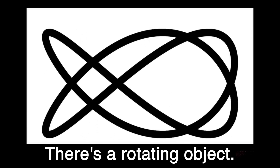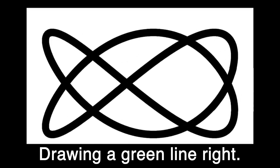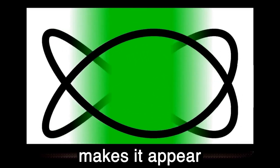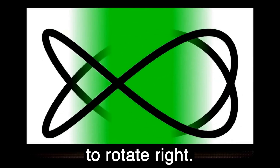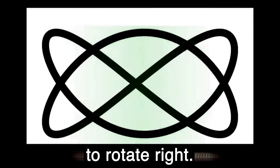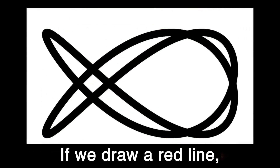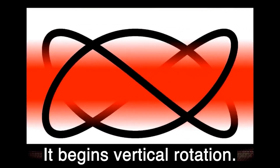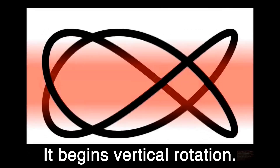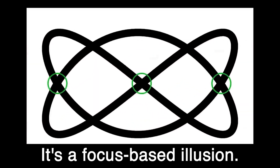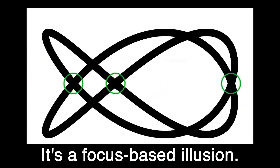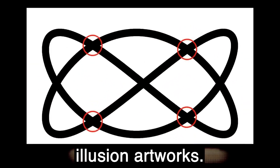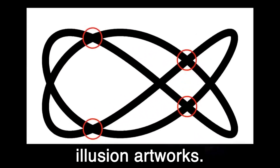There's a rotating object. Drawing a green line makes it appear to rotate right. If we draw a red line, it begins vertical rotation. It's a focus-based illusion. Let's explore illusion artworks.